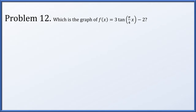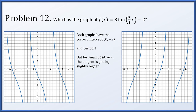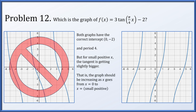Problem 12: Which is the graph of f(x) = 3·tan(π/4·x) - 2? Again we have two options. Both graphs have the correct intercept of (0, -2) and the correct period of 4. For small positive x's, tangent is positive and increasing from 0. So if x becomes slightly positive, we expect the graph to go up a little bit. That eliminates one option, and therefore it's the graph on the right.